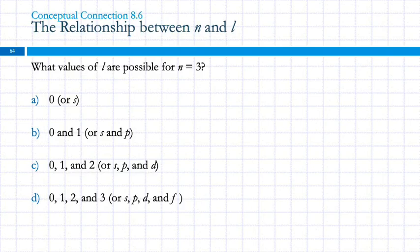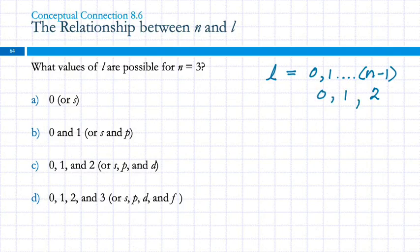What values of l are possible when n equals 3? l can be 0, 1, etc., up to 1 less than n. So if n is 3, then n minus 1 would be 2, giving us 0, 1, and 2 — that's choice C. l equals 0 is an s orbital, l equals 1 is p, and l equals 2 is d.